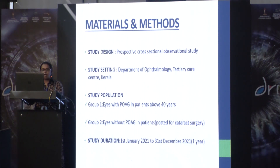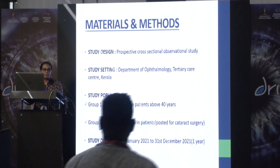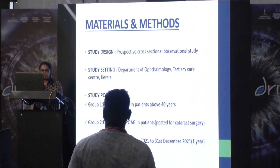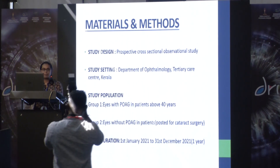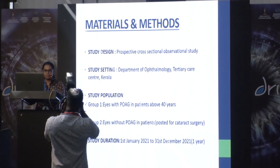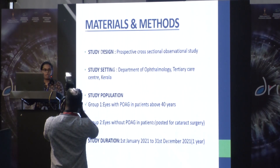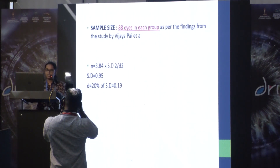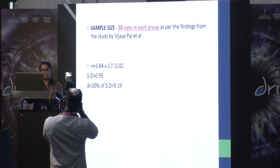This was a prospective cross-sectional observational study held at the ophthalmology department in a tertiary care centre in Kerala over a period of one year. The study population had two groups: Group 1 was eyes with primary open angle glaucoma in patients above 40 years of age, and Group 2 was eyes without primary open angle glaucoma in patients posted for cataract surgery. A sample size of 88 eyes in each group was calculated according to the findings from the parent study.